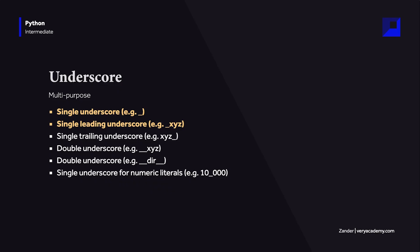Next up: the leading or prefixed underscore. Unlike other programming languages such as Java, Python doesn't have a strong distinction between private and public variables. A single underscore before a name is used to specify that the name is to be treated as private by the programmer. This convention adds readability — the next developer reading your code can understand that a particular variable or function is a non-public part of an API.